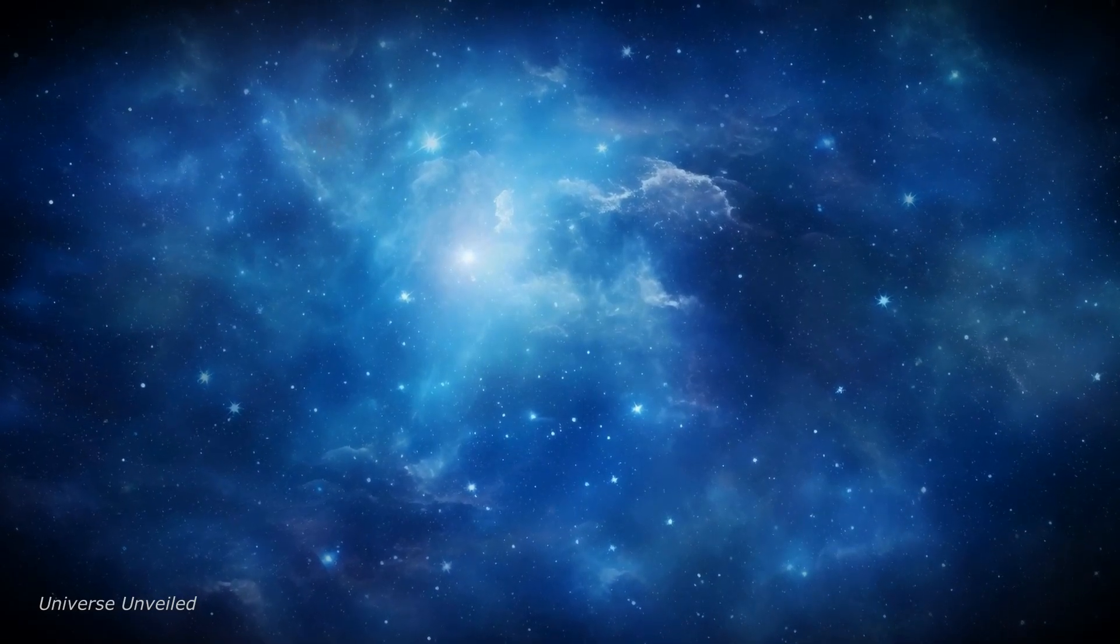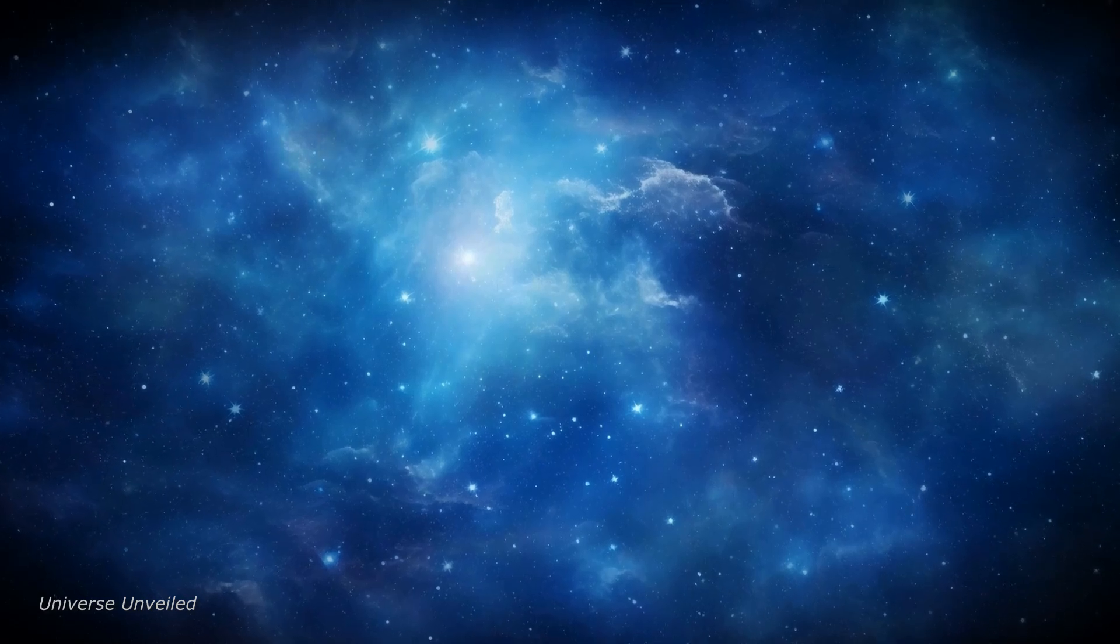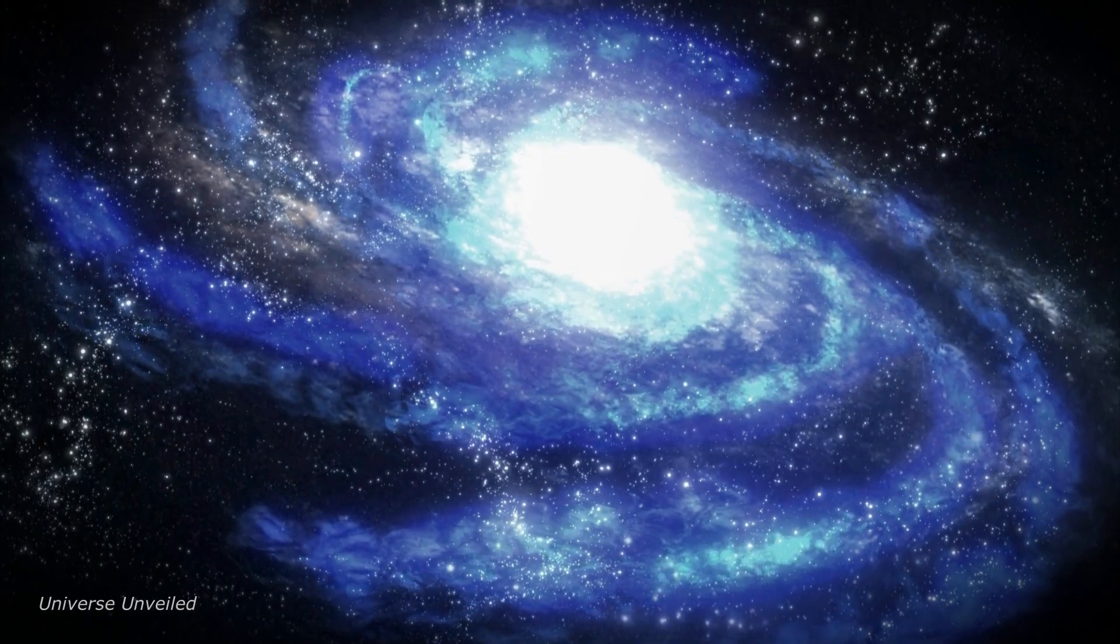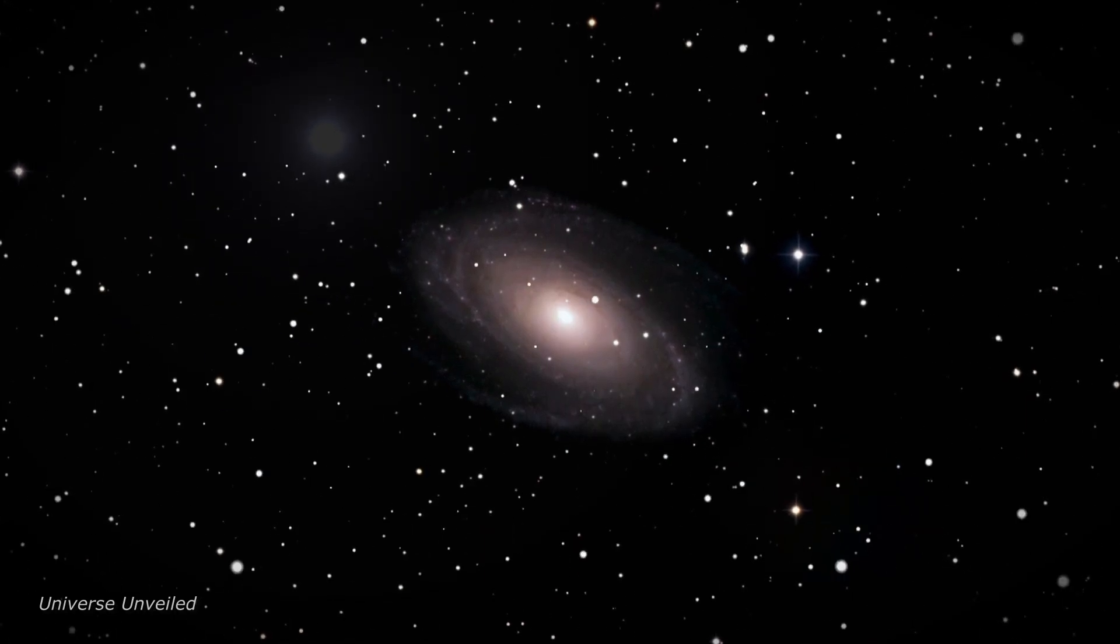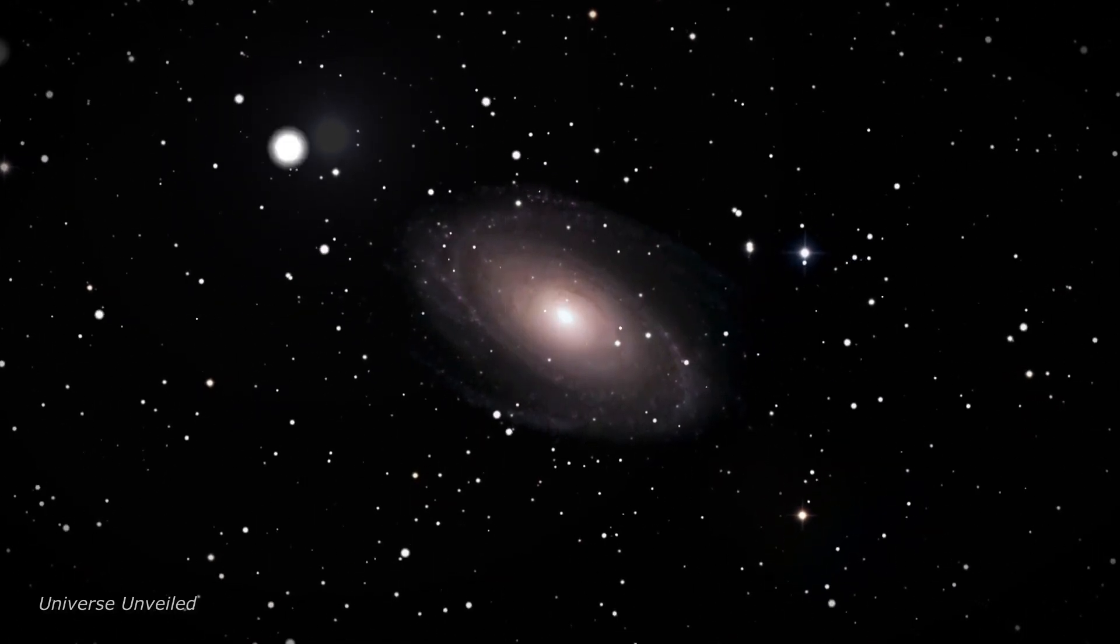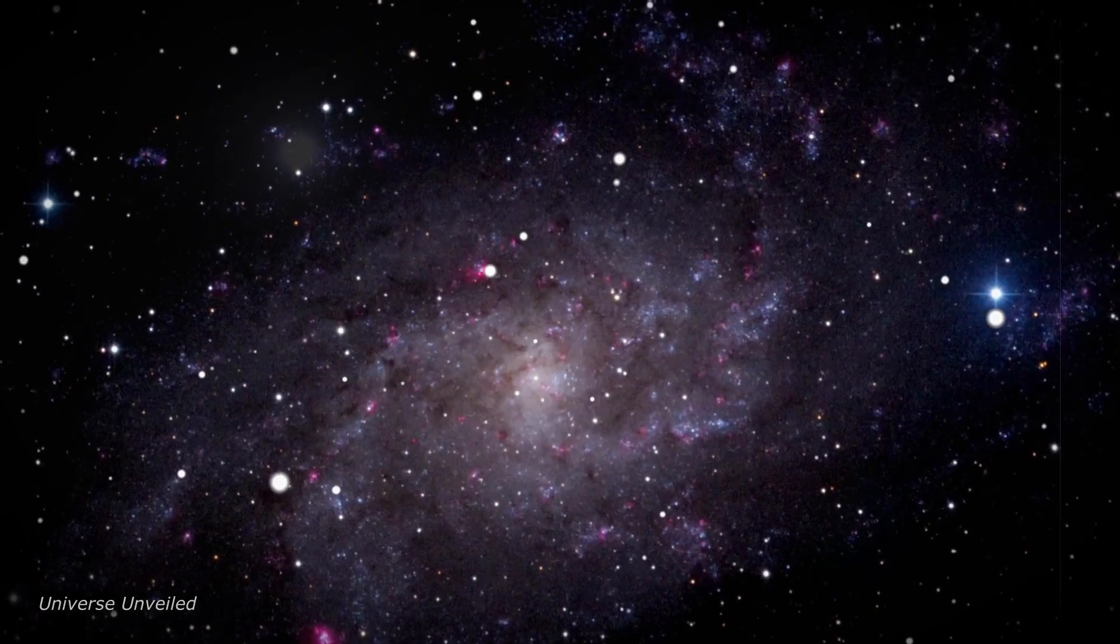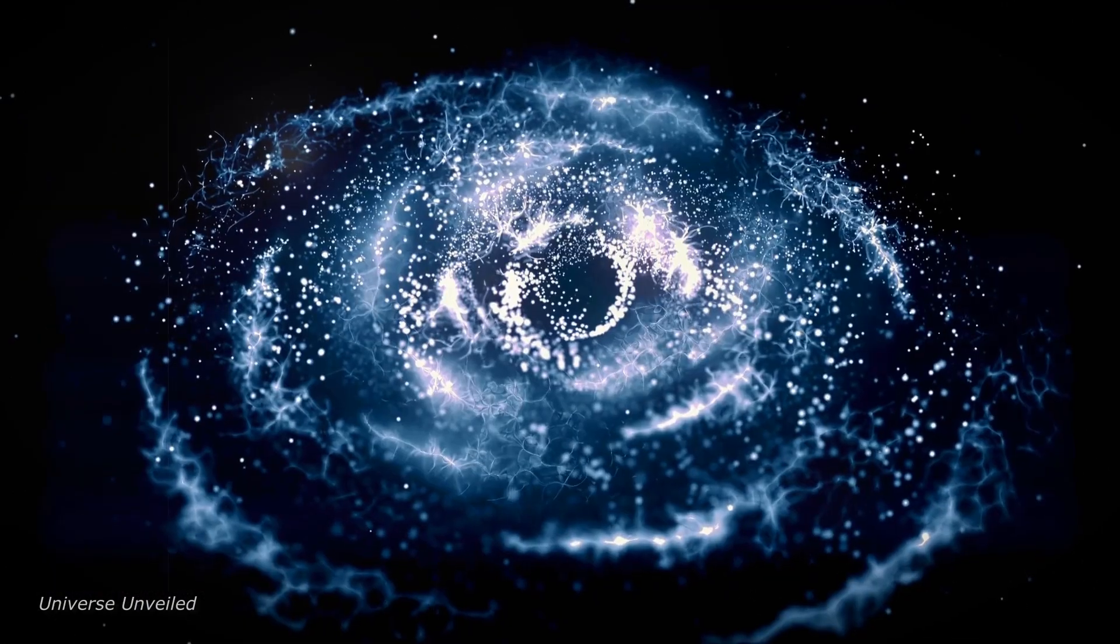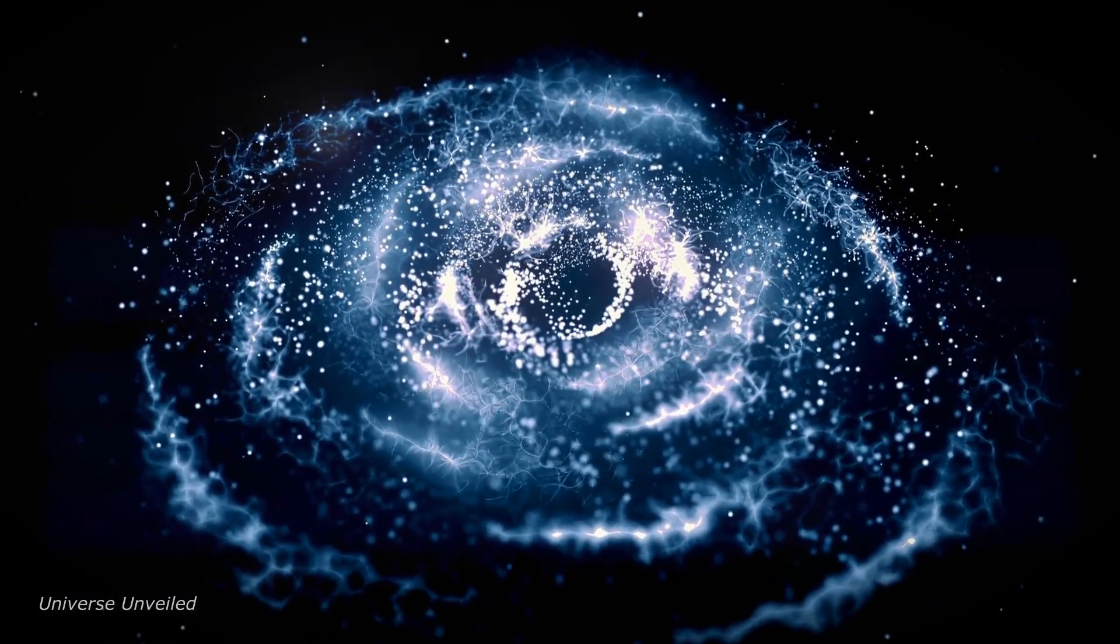Moreover, the central regions of the galaxies, often dense with stars, can merge. This can lead to the formation of a single, more massive galaxy. Occasionally, if one or both galaxies host a supermassive black hole at their centers, these black holes might spiral towards each other and eventually merge.